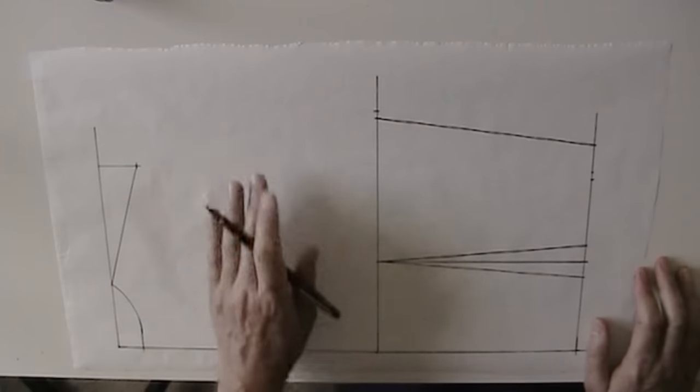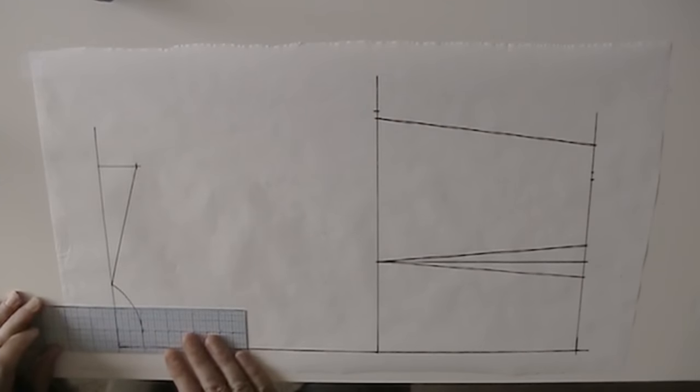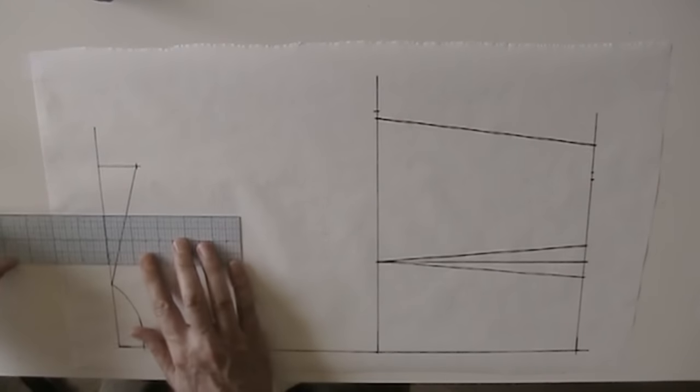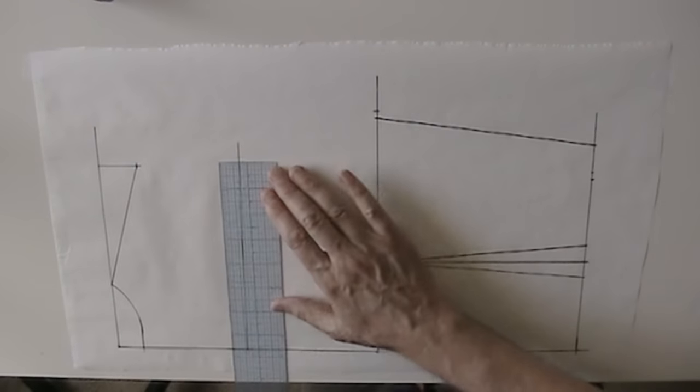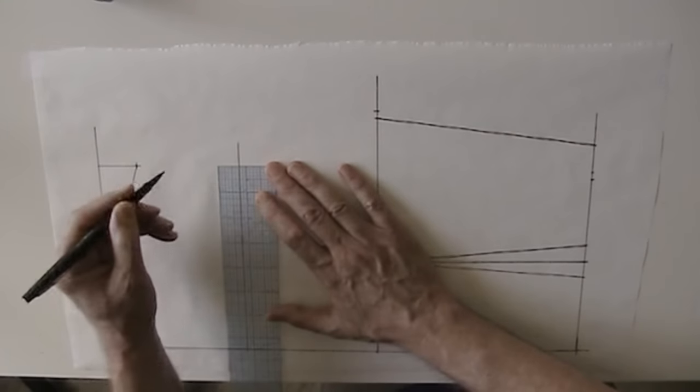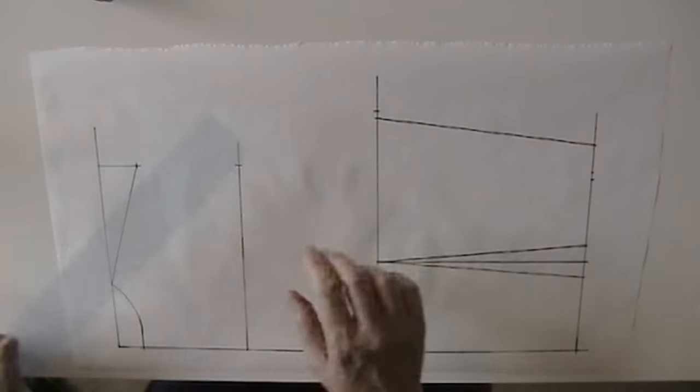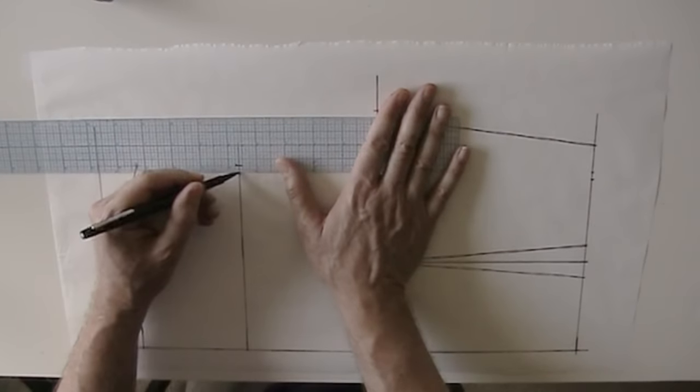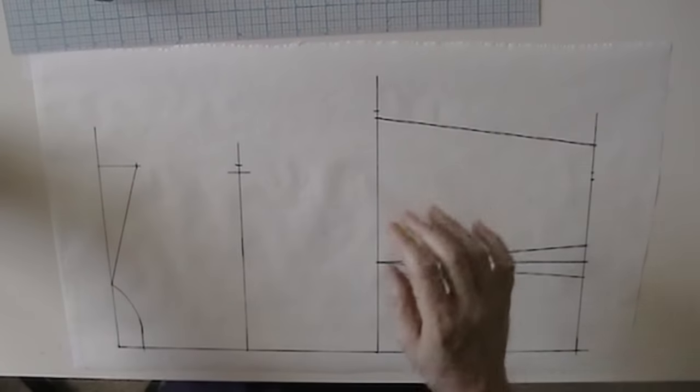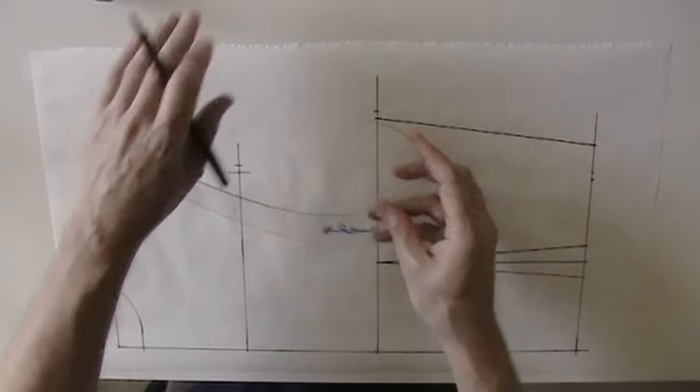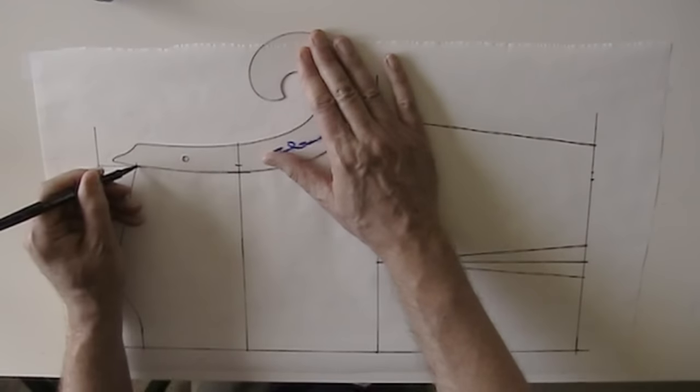Now we need to address the across back area. Now I typically like to measure the across back five inches below the high point shoulder. So I'm going to draw a line that's five inches down from my high point shoulder line. And square it. And I'm going to mark it at my shoulder width, which was seven and a half. And because we are slightly narrower across the back than we are across the shoulder, I'm going to measure in one quarter and draw a short line or half a centimeter to a full centimeter.